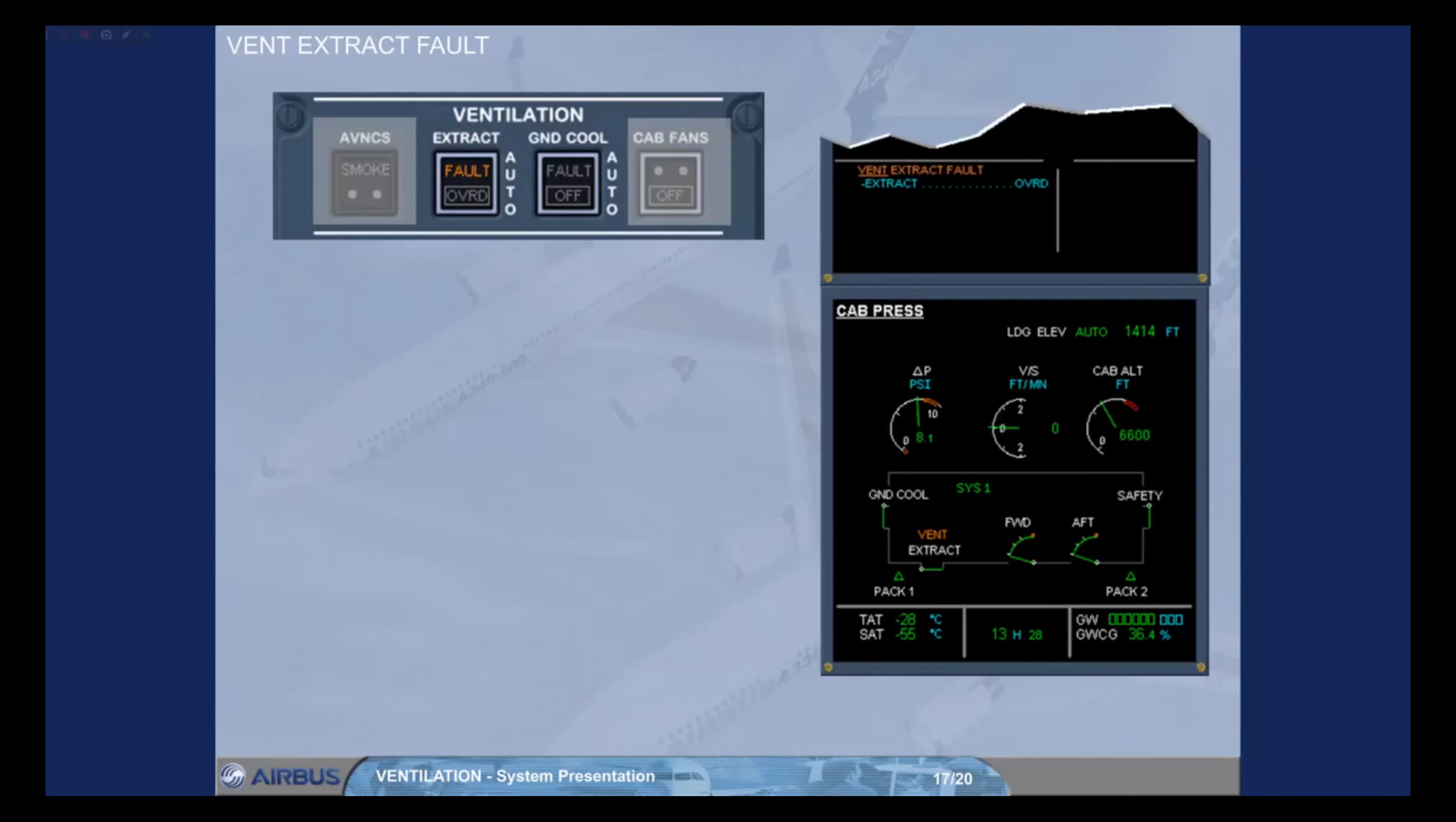Let's now set a vent extract fault. A failure message and associated ECAM procedure have appeared on the engine warning display. A fault light is on on the ventilation panel. The ECAM cabin press page has been automatically called to show amber vent indications. These are showing that there is a problem with the extract system. A low extraction airflow is detected through the extract valve.